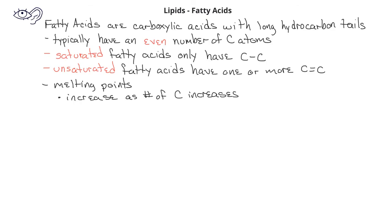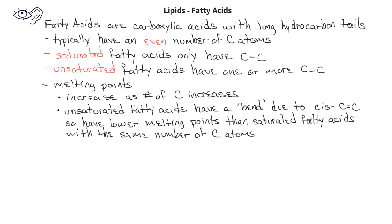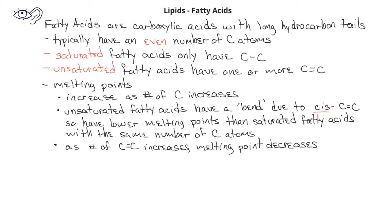In general, the melting point of fatty acids increases as the number of carbons increases. When we have an unsaturated fatty acid with a double bond, the double bonds in naturally occurring fatty acids will typically be in a cis conformation. This cis conformation of the double bond creates a bend in the chain, so fatty acids will pack less tightly together. Since they're packed less tightly together, their dispersion forces will be weaker, and so unsaturated fatty acids typically have lower melting points than saturated fatty acids with the same number of carbons. In general, the more unsaturated the fatty acid, the lower the melting point will be.